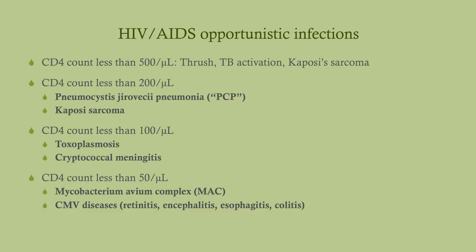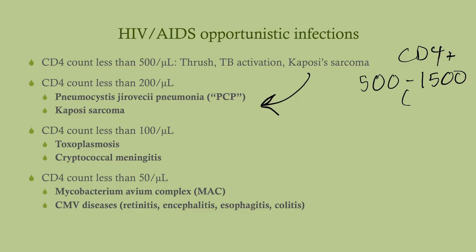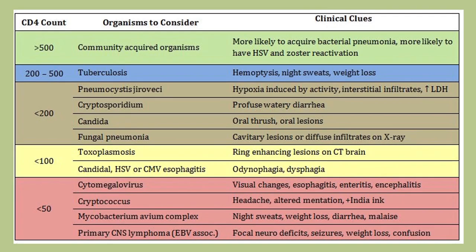Above 500, there is risk of things like thrush and TB activation, and even Kaposi's sarcoma, though that more commonly appears below 200. The normal CD4 count is between 500 and 1500. Below 500, you start running the risk of thrush and TB activation. Below 200, you can get PCP and Kaposi's sarcoma. Below 100, it's toxoplasmosis and cryptococcal meningitis. Then below 50, you get more severe problems like MAC and CMV infection.